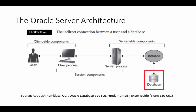Here we have the Oracle Server Architecture. We have several components between the user and the database. The main two components include the user processes and the server processes. For the server processes we have two separate ones, one for the application and one for the database.